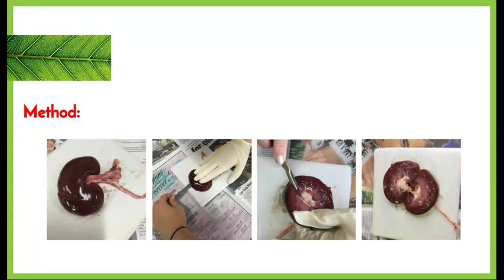For the method, you'll be given a kidney that will hopefully have a few vessels attached to it. Lay it flat on the table and identify some of the external structures. Then create a transverse cut — a cross-section through the kidney — and lay it flat so you're able to identify the different areas we've already looked at, as well as the structures we need to identify and know the function of for the syllabus.